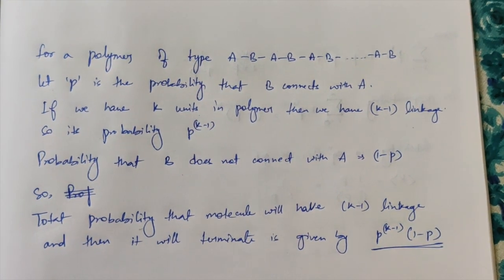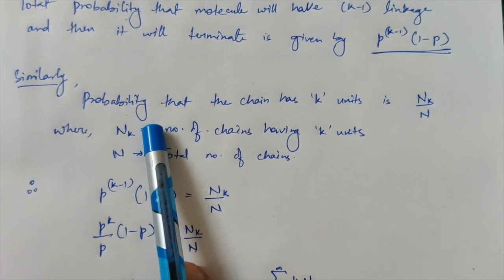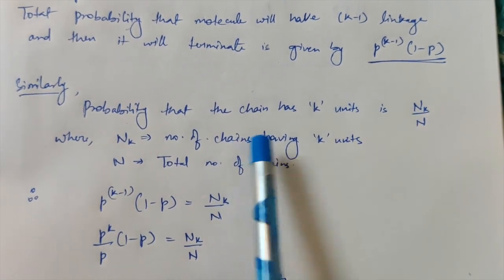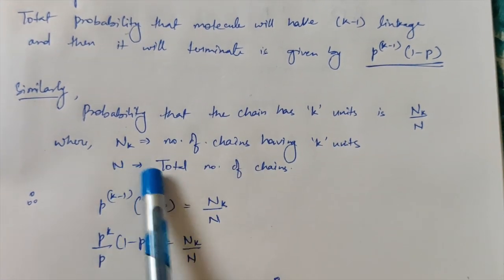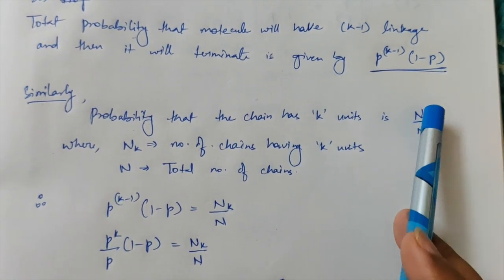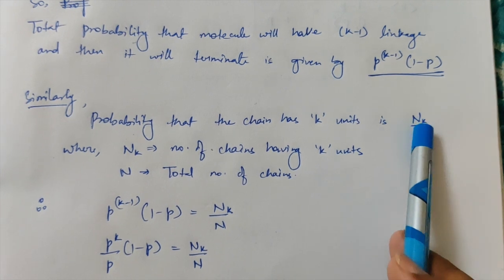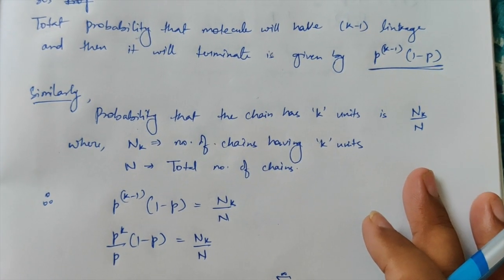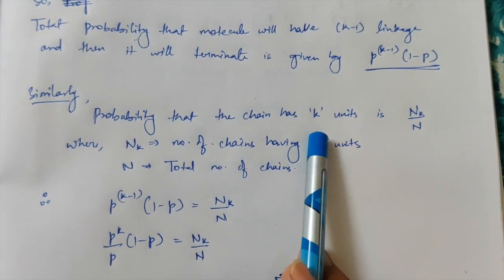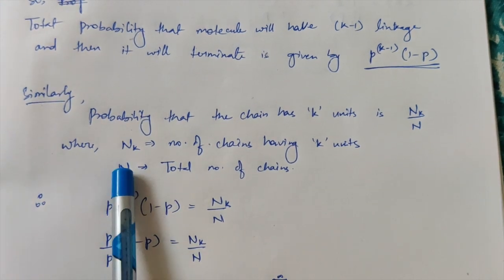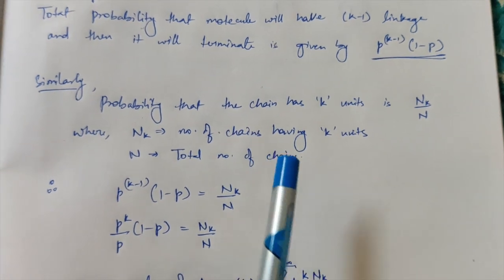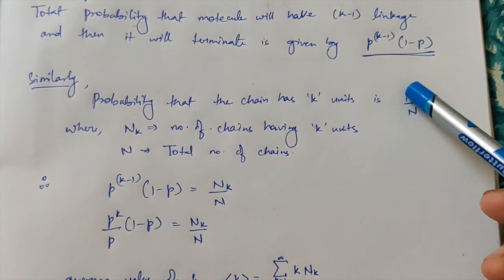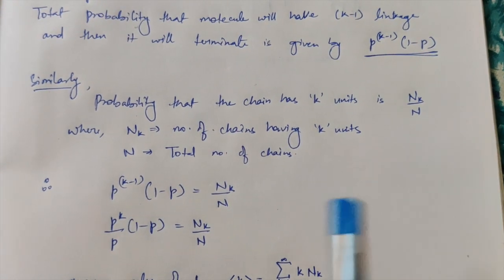There is another formula for the probability that a chain will have K units, given by N_k over N, where N_k is the number of chains having K units and N is the total number of chains. Dividing them gives the total probability. We now have two formulas for total probability — one from the linkage argument and one from the chain count — so we equate both of them.